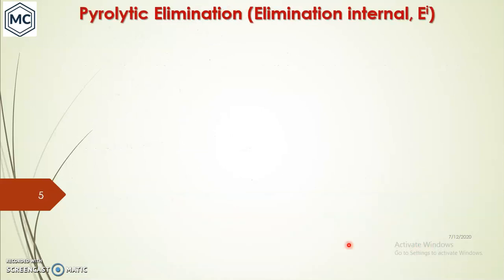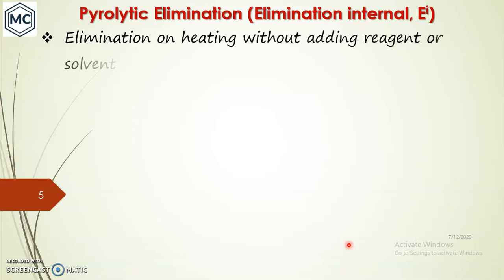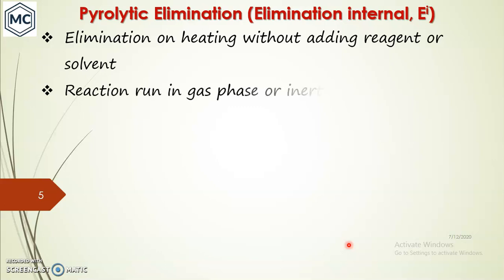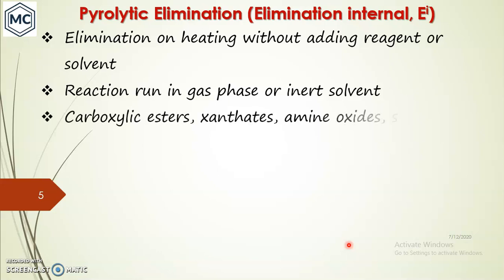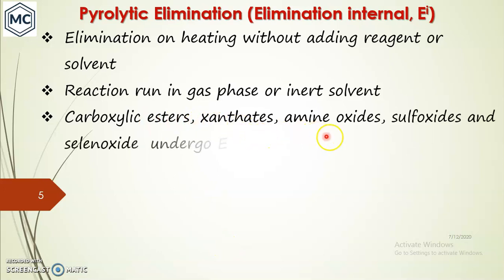The next topic is pyrolytic elimination, also called elimination internal or EI reaction. Pyrolysis — from the name itself — is elimination on heating without adding a reagent or solvent. It is a reaction usually carried out in the gas phase or in an inert solvent in some cases. Groups such as carboxylic ester, xanthate, amine oxide, sulfoxide, and selenoxide can undergo co-EI reaction.